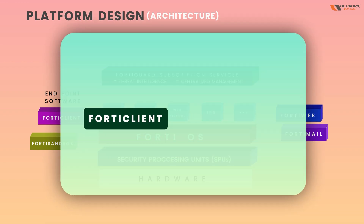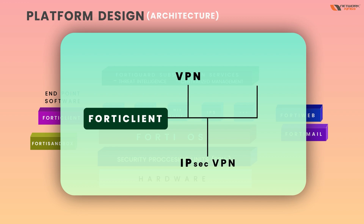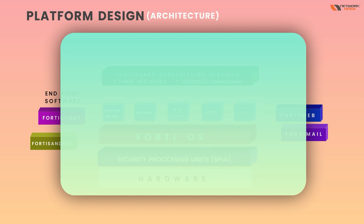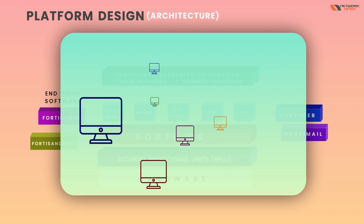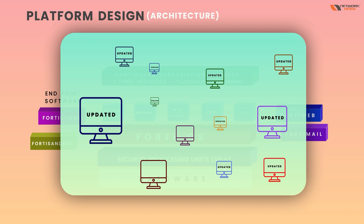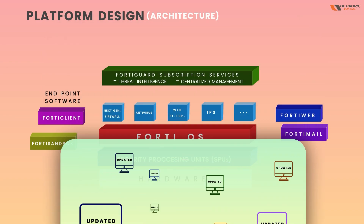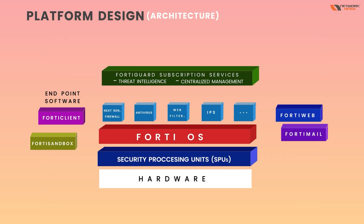FortiClient works just like Cisco AnyConnect — it helps you connect to VPN, both IPsec VPN and SSL VPN. Apart from that, it also checks whether the Windows systems you are on are updated or not, and only then allows you to connect to the network.